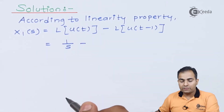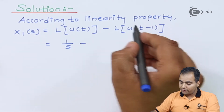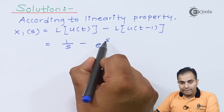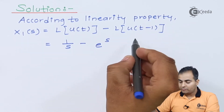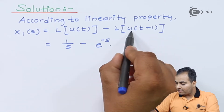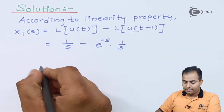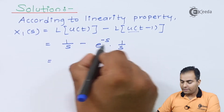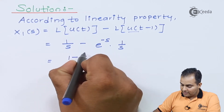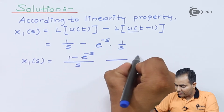For the Laplace transform of u(t−1), the function is delayed by 1. Using the time-shifting property, multiply s with the delayed value, which is −1, giving e^(−s). Multiplied by the Laplace transform of u(t), which is 1/s. Taking 1/s common in the denominator, the result is (1 − e^(−s)) / s. This is X1(s), which I will call equation number 2.